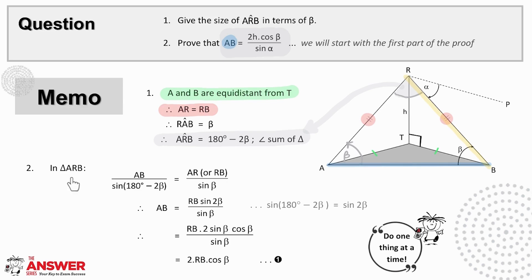In triangle ARB, using the sine rule, we can say AB over sine 180 minus 2 beta equals AR or RB over sine beta. Sine 180 minus 2 beta then reduces to sine 2 beta. And if we multiply through by this, we get that AB equals RB sine 2 beta over sine beta.